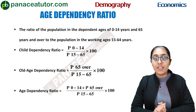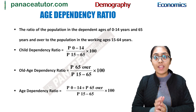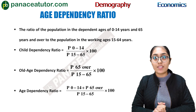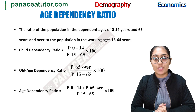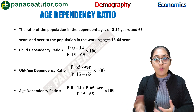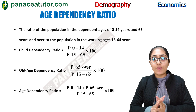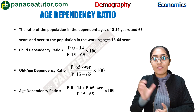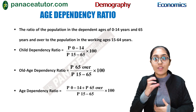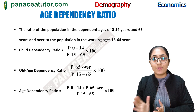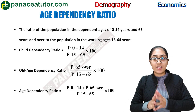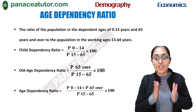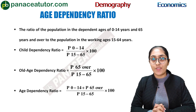Child dependency ratio is calculated as: number of children between ages 0 to 14 years divided by number of people between 15 to 65 years (working population), multiplied by 100. Old age dependency ratio is calculated as: number of people above 65 years divided by the working population (15 to 65 years), multiplied by 100. Age dependency ratio is simply the addition of child dependency ratio and old age dependency ratio.